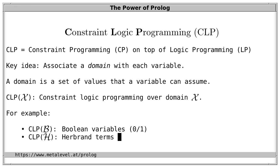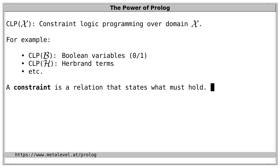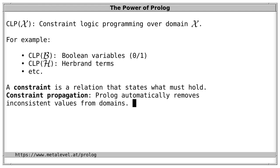Constraint programming blends especially well with logic programming languages like Prolog. A constraint is a relation stating what must hold between variables, mapping directly to predicates in Prolog. The key task of a constraint system is constraint propagation: automatically removing domain elements that cannot be part of any solution because they would violate stated constraints. Such elements are called inconsistent. There's a trade-off between strength and efficiency of propagation, and different systems make different implementation choices.